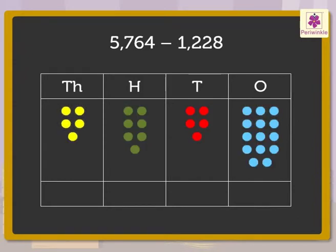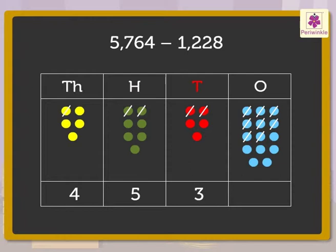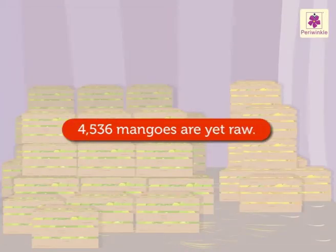Now, let us cancel eight blue dots, two red dots, two green dots and one yellow dot. We are left with six blue, three red, five green and four yellow dots. So, we get in all four thousands, five hundreds, three tens and six ones, which is equal to four thousand five hundred thirty-six. Thus, four thousand five hundred thirty-six mangoes are yet raw.